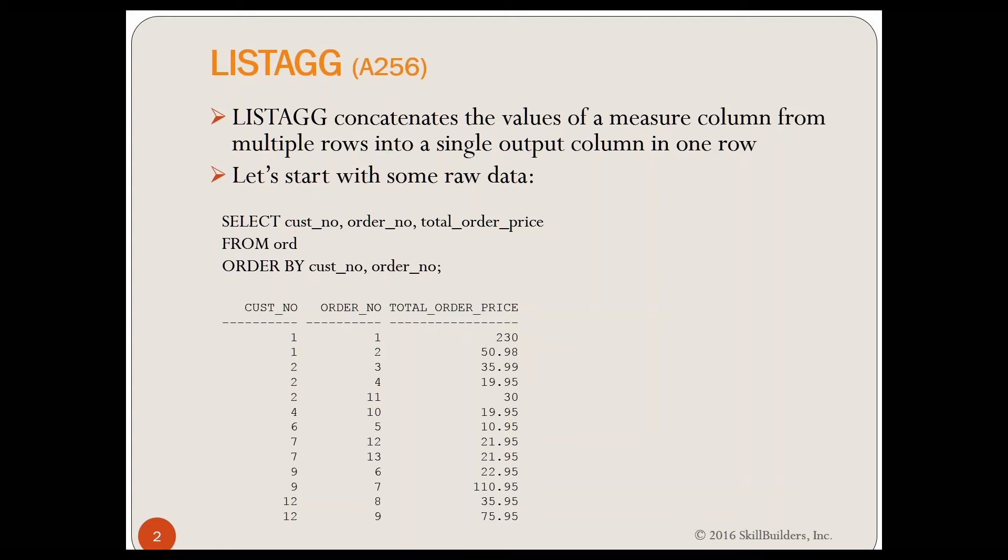Let's start with some raw data. Let's just look at our order table, and notice that we have three pieces of information here. We have a CUSNO, an OrderNO, and Total Order Price. And notice for customer number one, we have two orders, Order 1 and Order 2, 230 and 50.98.